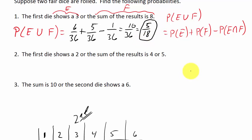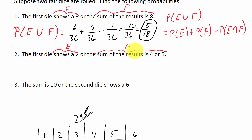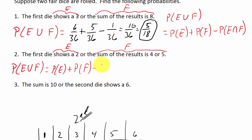Now let's look at the next problem: the first die shows a 2, or the sum of the results is 4 or 5. We'll say 'shows a 2' is event E, and 'sum is 4 or 5' is event F. We want P(E or F) = P(E) + P(F) − P(E ∩ F).